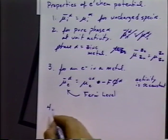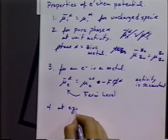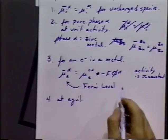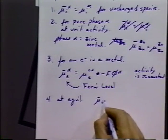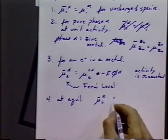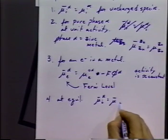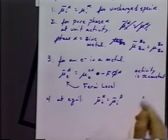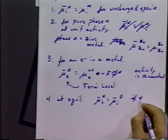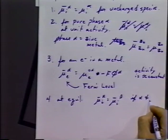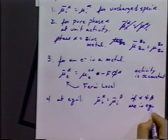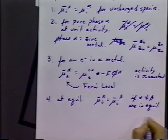Point number four: at equilibrium, the electrochemical potential of species I in phase alpha is going to be equal to the electrochemical potential of species I in phase beta, if alpha and beta are at equilibrium and in contact.